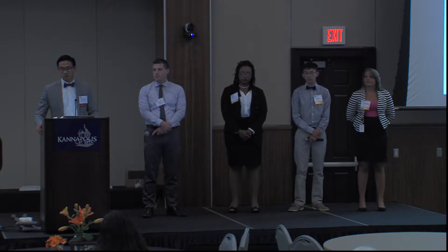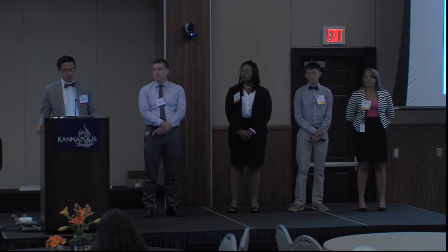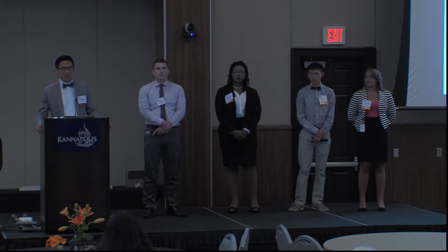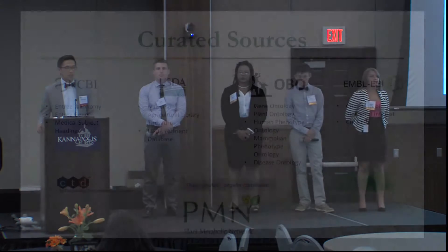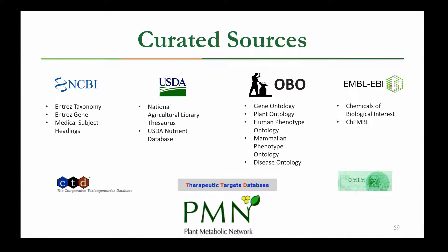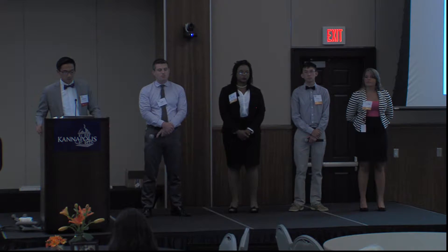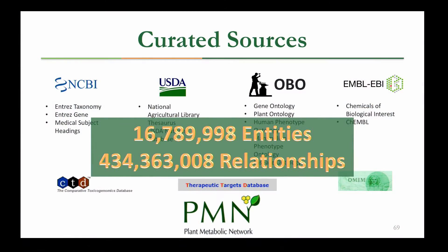The first set of sources are the publicly available curated sources. These include controlled vocabularies and ontologies, such as the gene ontology, as well as association databases such as the Therapeutics Targets Database and the Online Mendelian Inheritance in Man database, which associates genes and proteins to different human health phenotypes and diseases. Overall, taking all these differently formatted pieces of data and putting them together, we're able to aggregate over 16 million entities and over 434 million relationships.